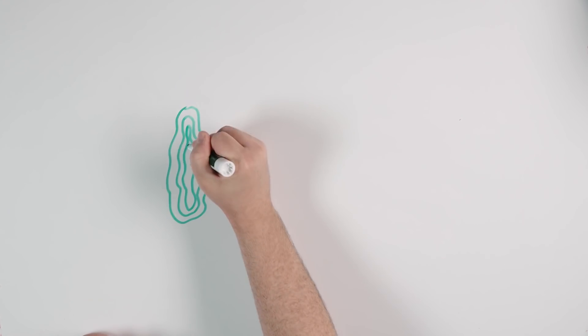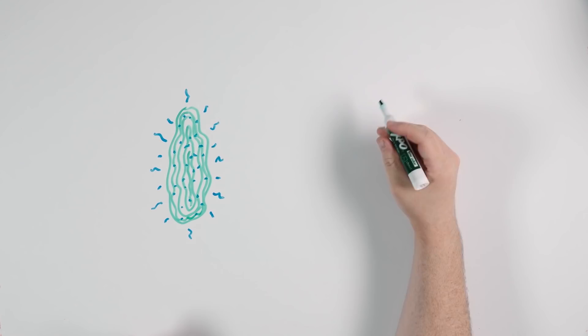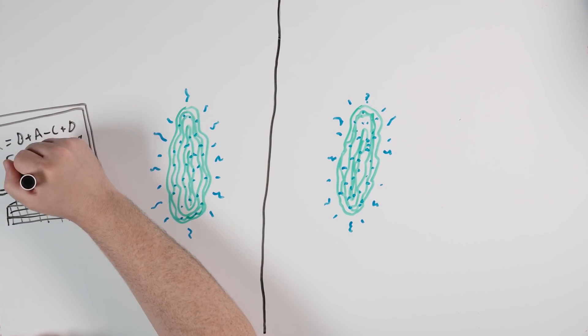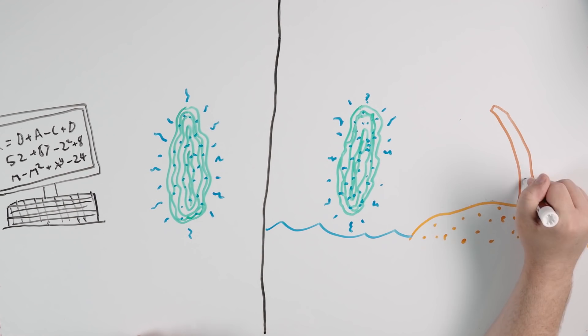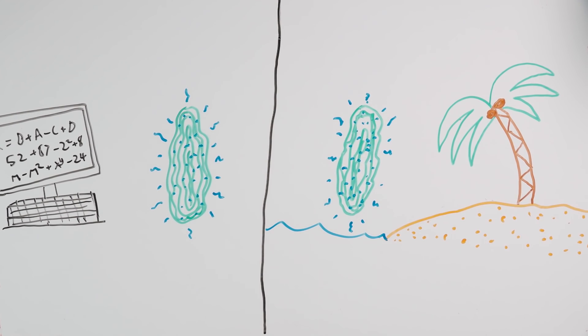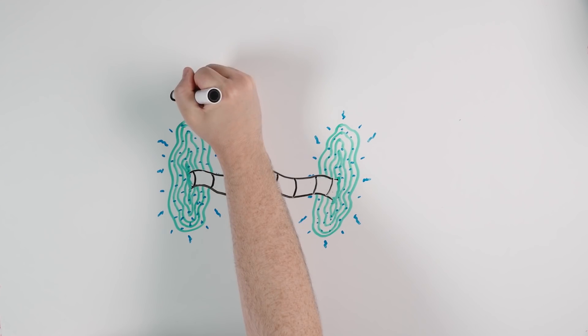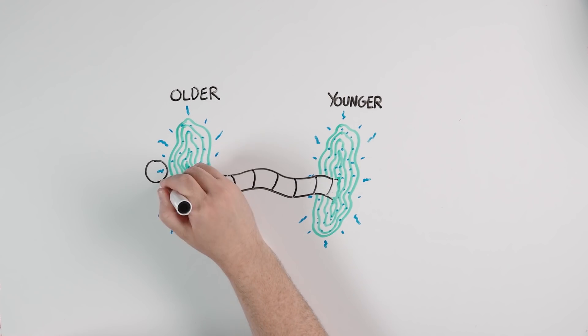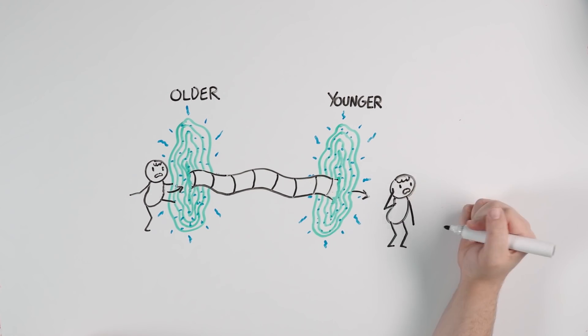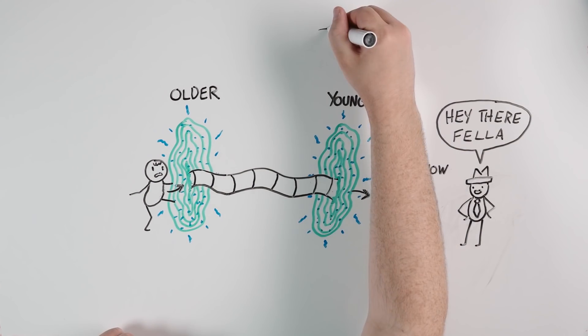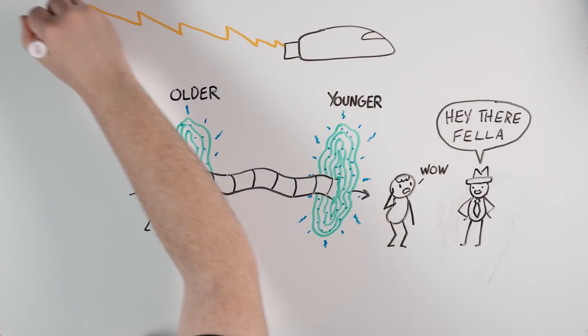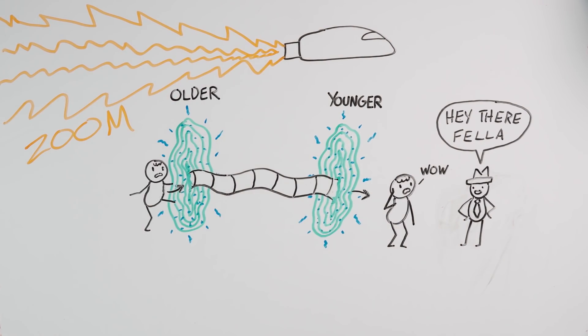You might do this by generating a traversable wormhole. That's basically two entangled black holes separated by some distance in space-time that can spit you out from one end of space-time to another almost instantaneously. This is basically what happens in the movie Interstellar. All you have to do is make a wormhole large and stable enough to create a time dilation between the two ends of the wormhole, which would make an older and a younger end. This would allow you to enter the older end of the wormhole and emerge from the younger end in the 1940s.